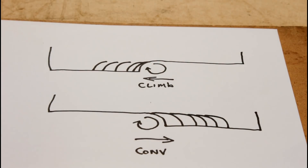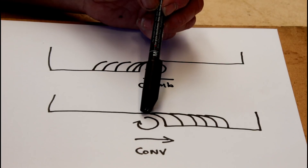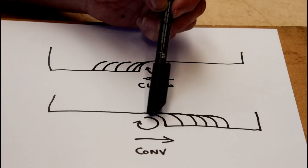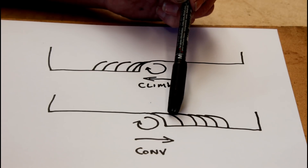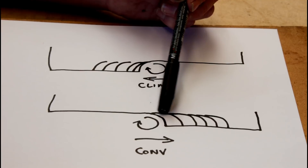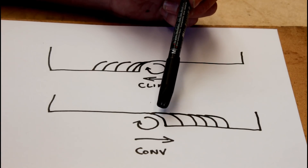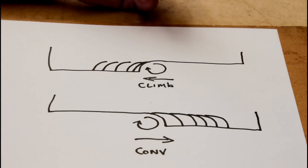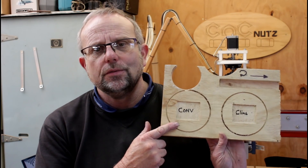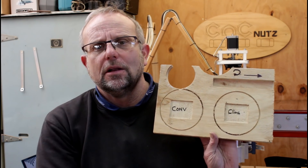So when climb cutting, the feed rate should be much slower than for a conventional cut. Even then, because the cut starts shallow and gets thinner, I think the fibres are more likely to bend out of the way than be sheared off. For conventional cutting the cut starts shallow and gets thicker, which I believe is more likely to shear the wood fibres cleanly and give a much better finish — and that matches what I see when cutting wood. The conventional cut always gives me a nicer finish than the climb cut, and as a result it's basically all I ever use.